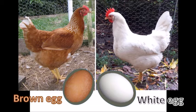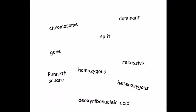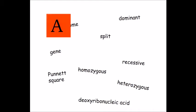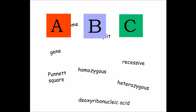Let's just define a few genetic terms with reference to chickens. These are not necessarily dictionary definitions, but I hope they'll explain what the words mean. When you read, you begin with ABC. In genetics, we begin with DNA.